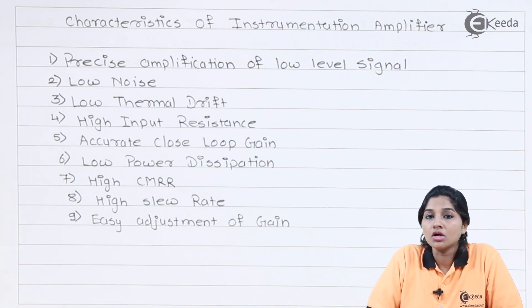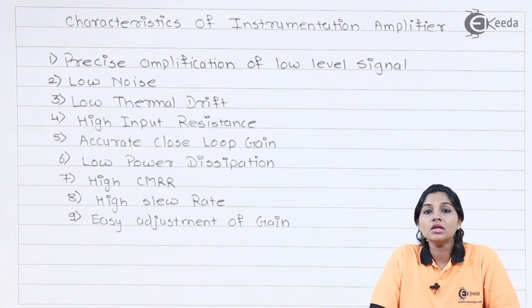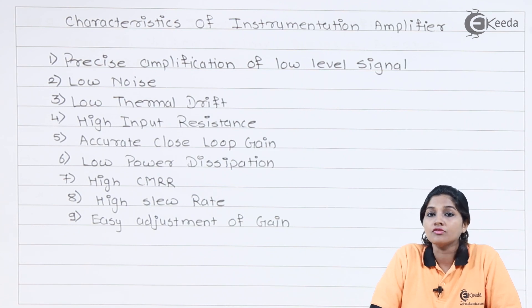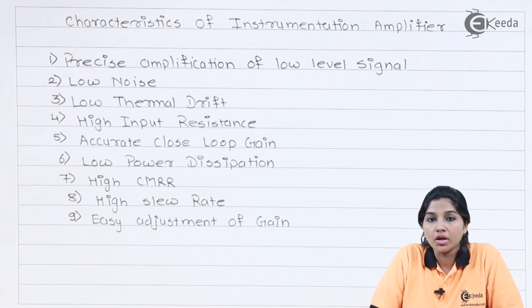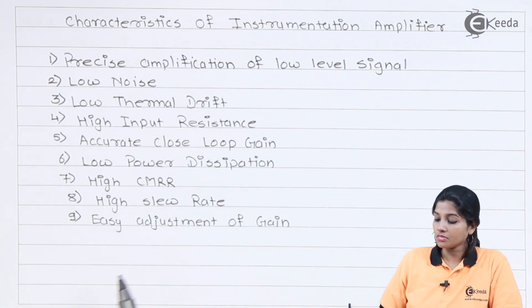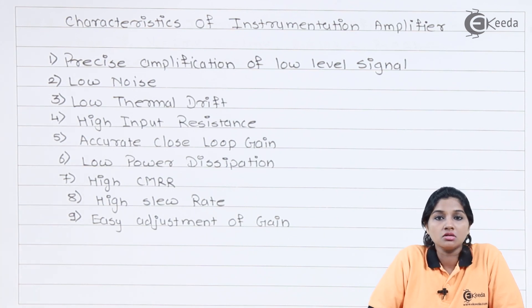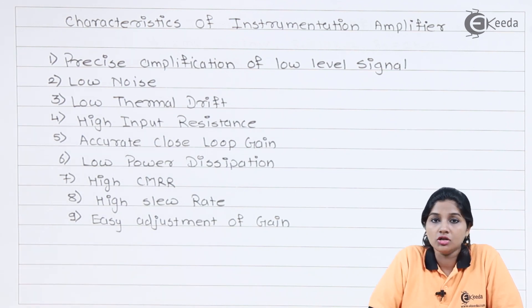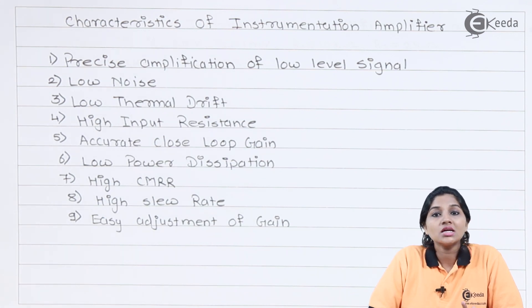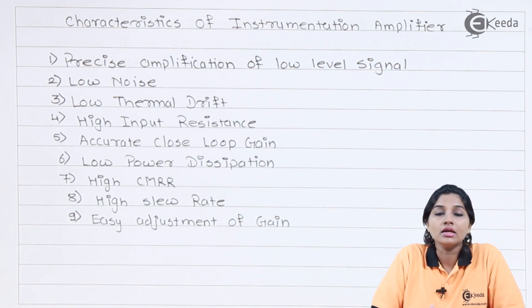The next parameter to consider is high slew rate. A high slew rate indicates there will be less distortion at the output of the instrumentation amplifier. A high slew rate also provides an undistorted output voltage swing at the output terminal of the instrumentation amplifier. The last requirement is easily adjustable gain, which can be achieved by using a potentiometer. By changing the value of the potentiometer, we can easily adjust the gain to an accurate value to get a desired and stable output. These are basically the characteristics and requirements of the instrumentation amplifier to consider when using it in any application.